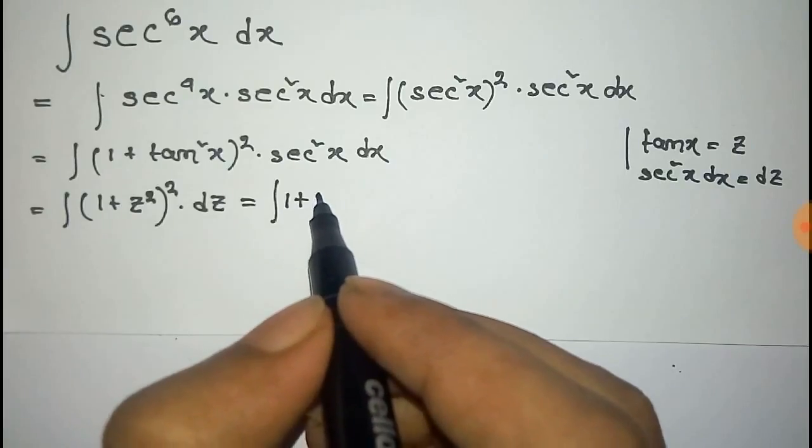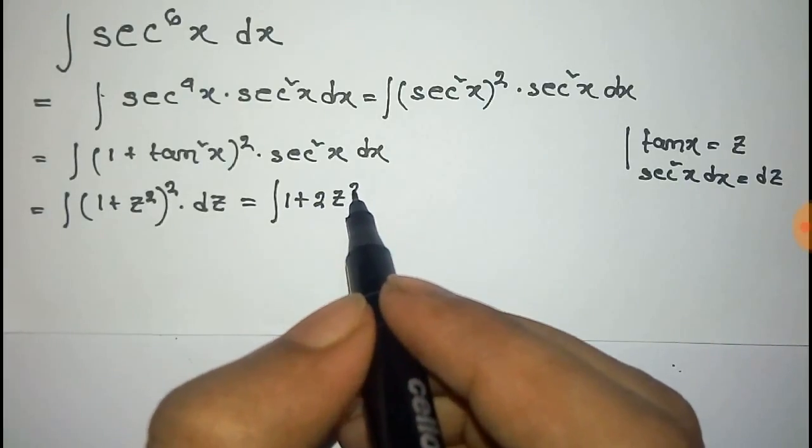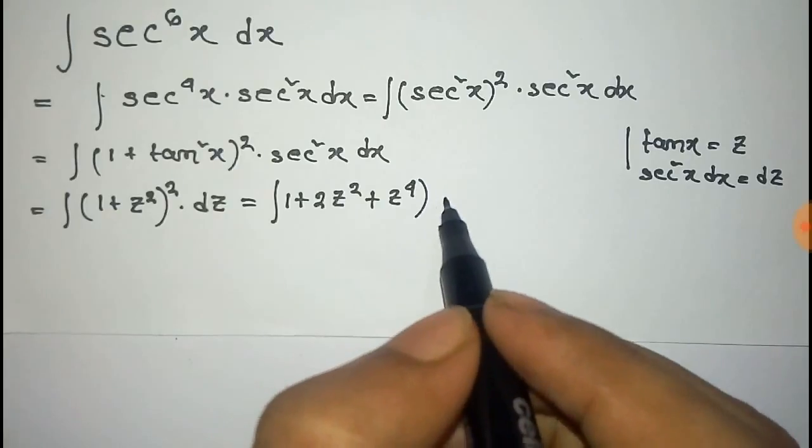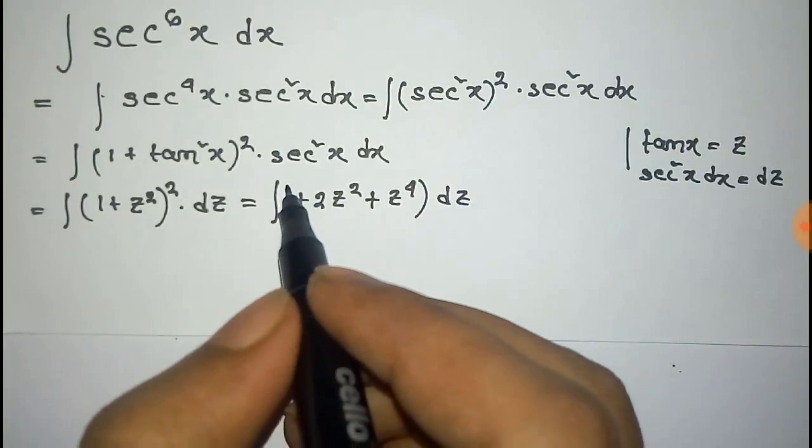So it will be 1 plus 2z^2 plus z to the power 4 after expanding into dz.